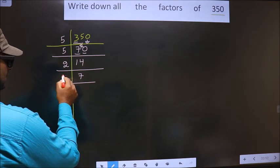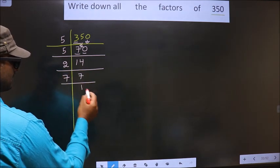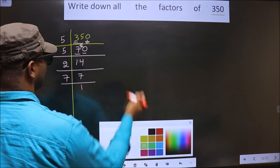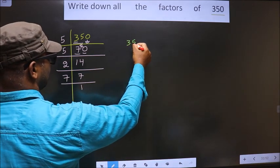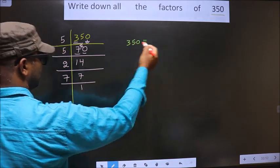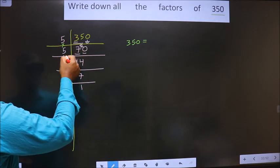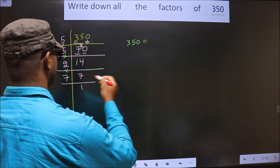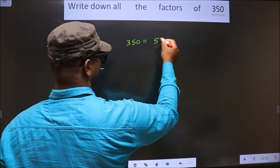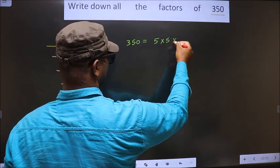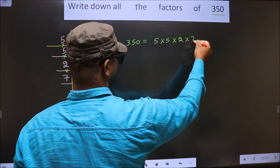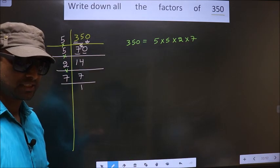Now 7 is a prime number, so we take 7 once 7. Now 350 is equal to the product of these numbers. That is 5 into 5 into 2 into 7. Okay. Next.